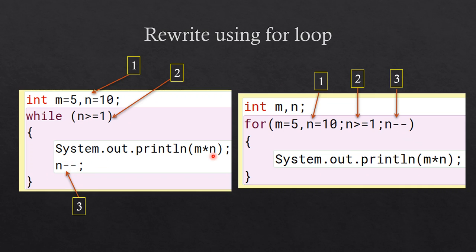Since n minus minus came into the for loop header as the updation statement, you have only one remaining statement as the body of the loop, and you write it as it is. This is how you convert — rewrite — a while loop to a for loop. Hope you understood this video; I will meet you in the next video. Till then, thank you.